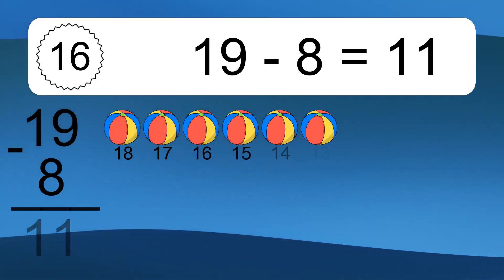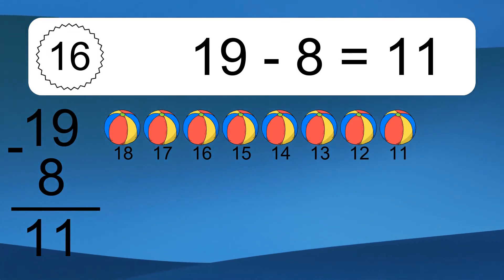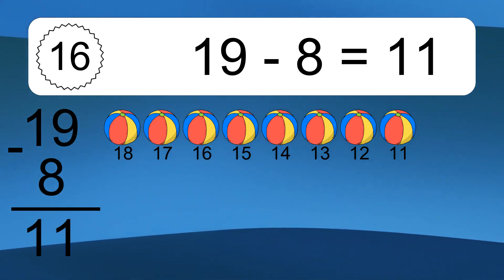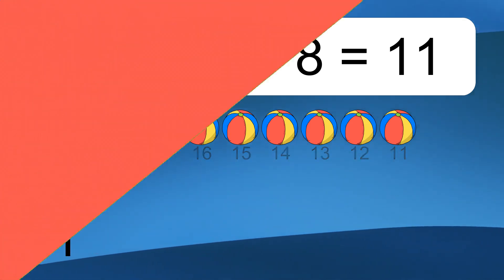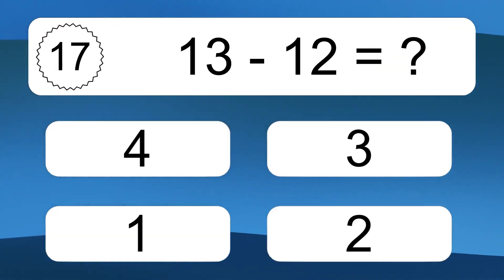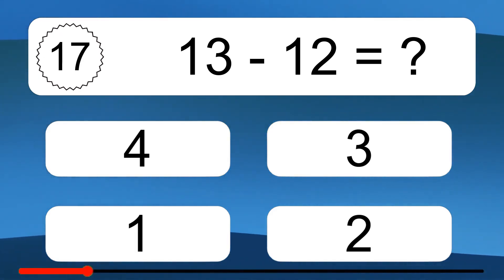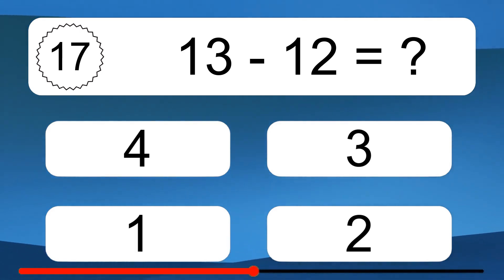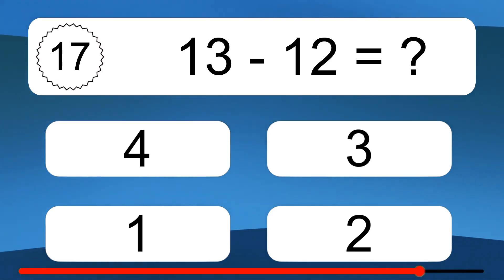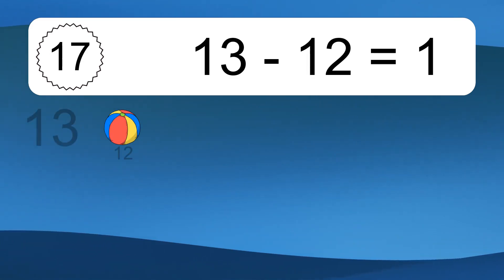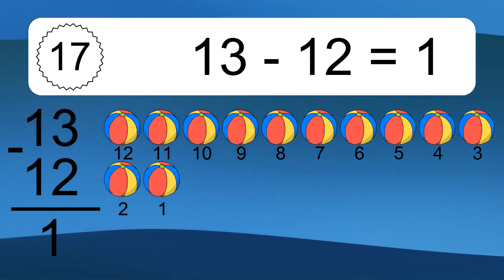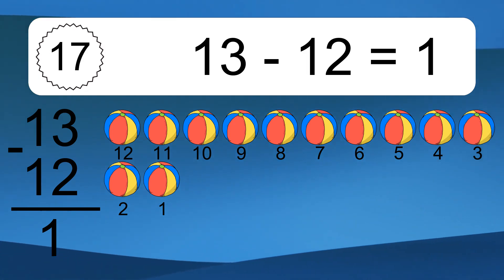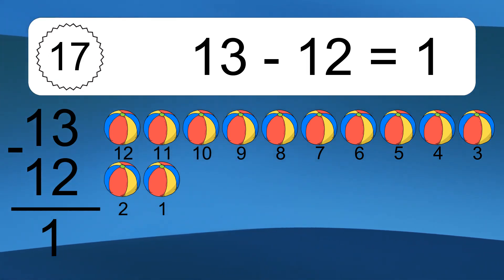19 minus 8 equals 11. Let's count it. 18, 17, 16, 15, 14, 13, 12, 11. 13 minus 12 equals what? 13 minus 12 equals 1. Let's count it. 12, 11, 10, 9, 8, 7, 6, 5, 4, 3, 2, 1.